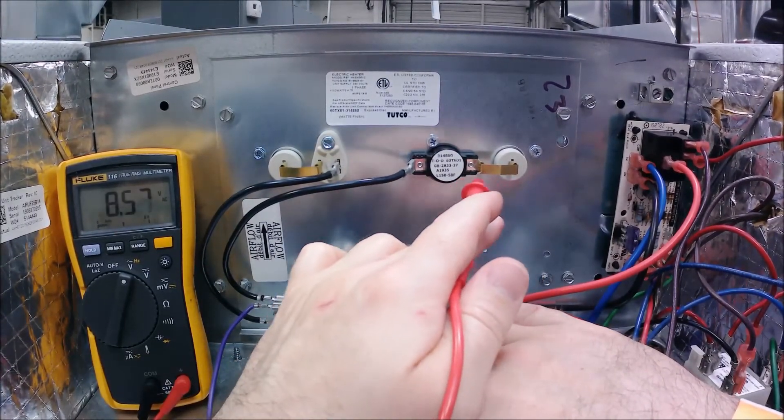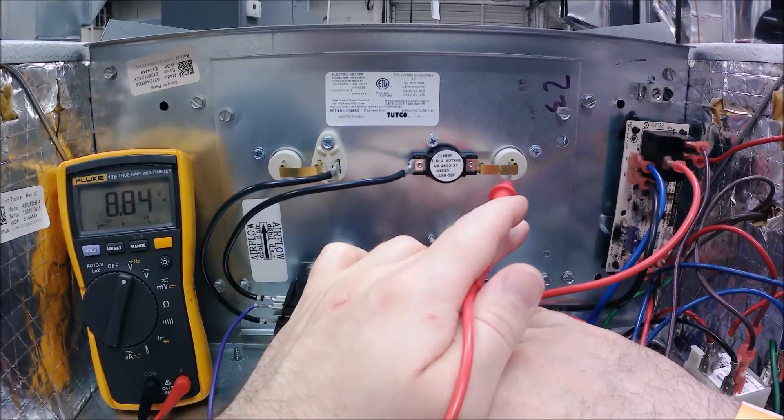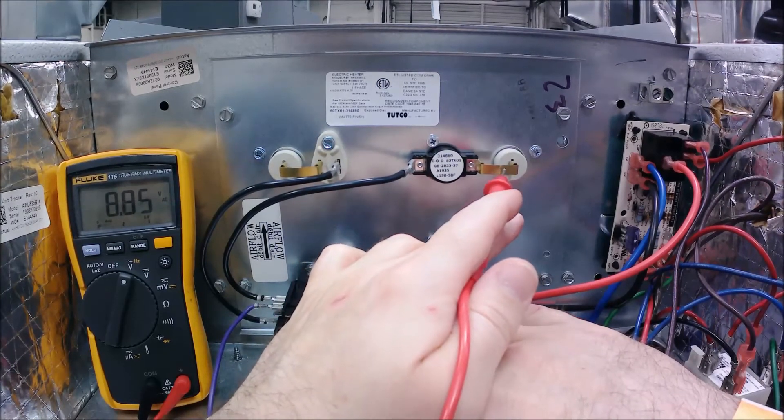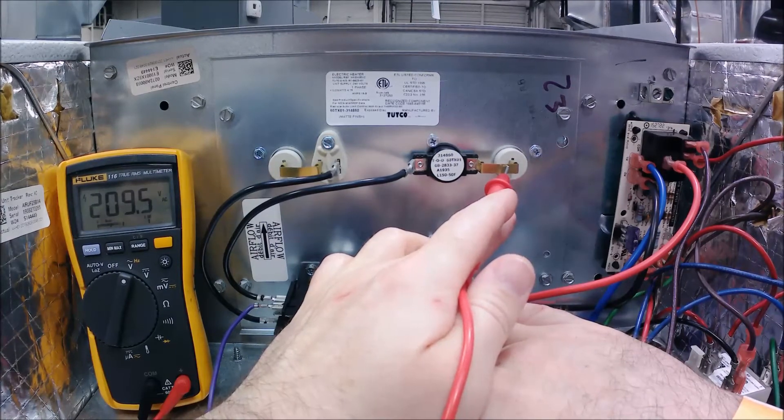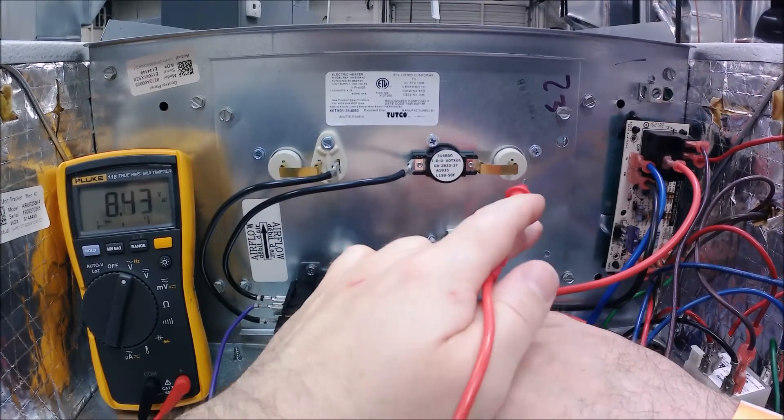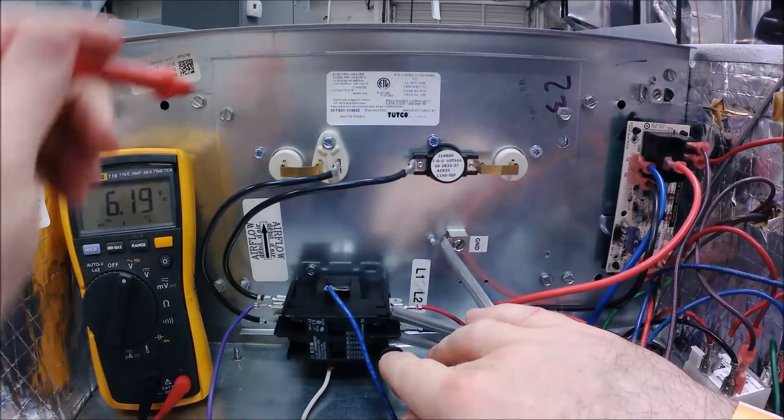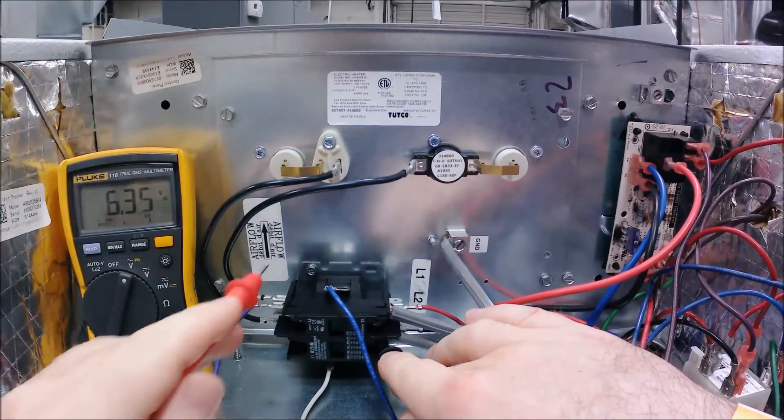This little brass looking clip right here - once it leaves the high limit it's going to go into our heating element. So I can touch right here and you can see I've got 210 volts. I've got full power going in. When it goes all the way through, loops around with the coil, it's going to come out over here.